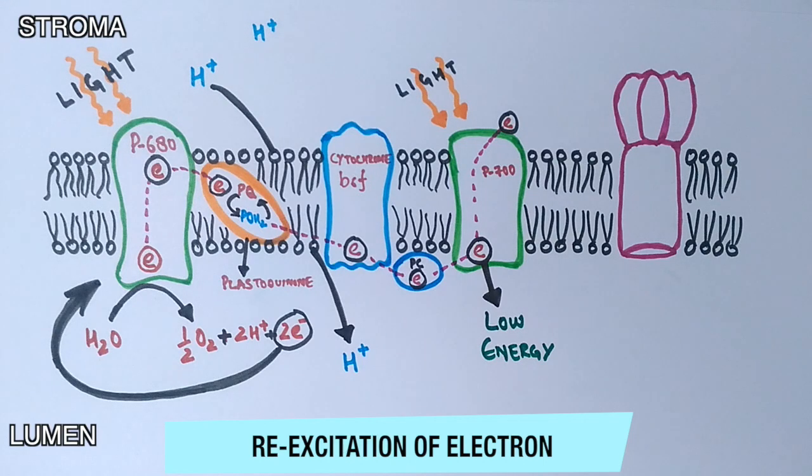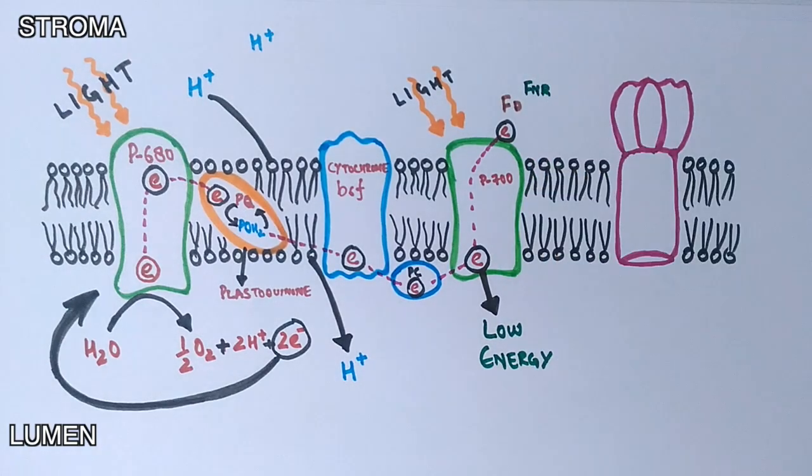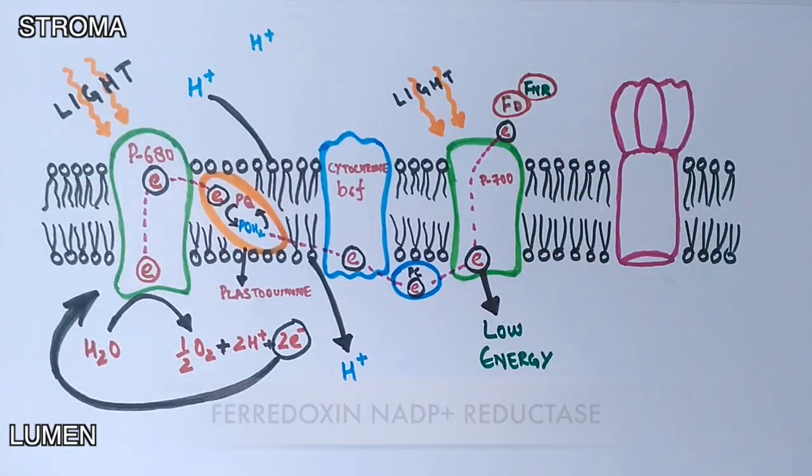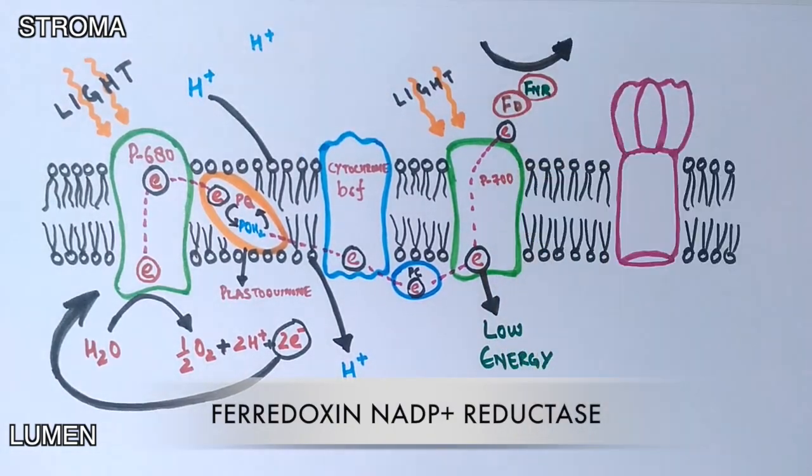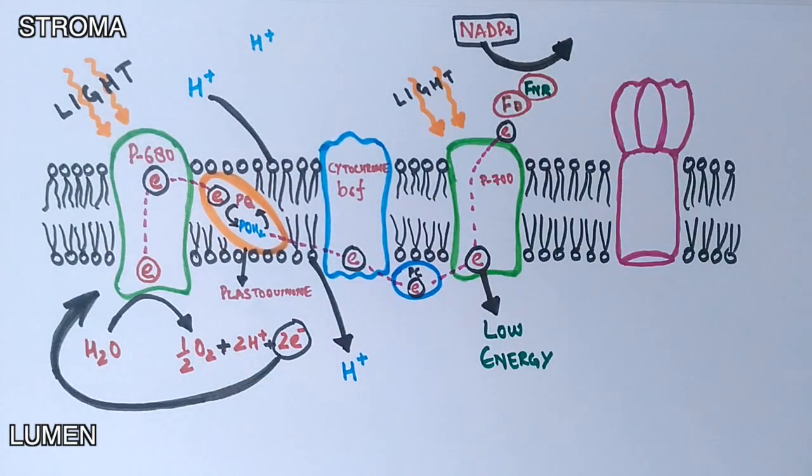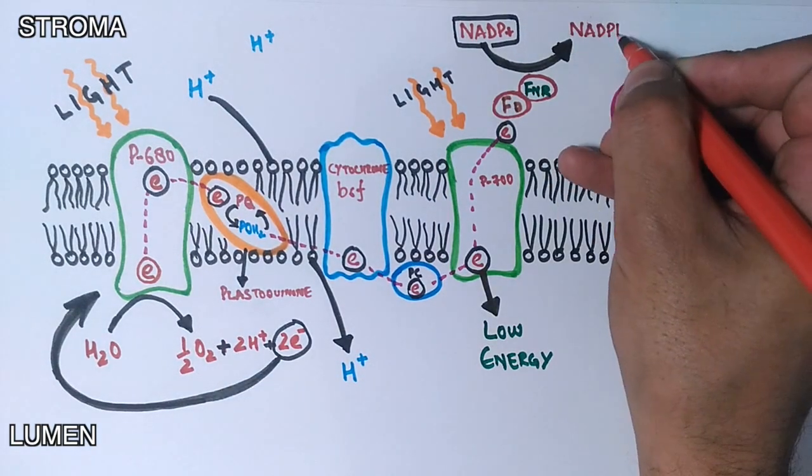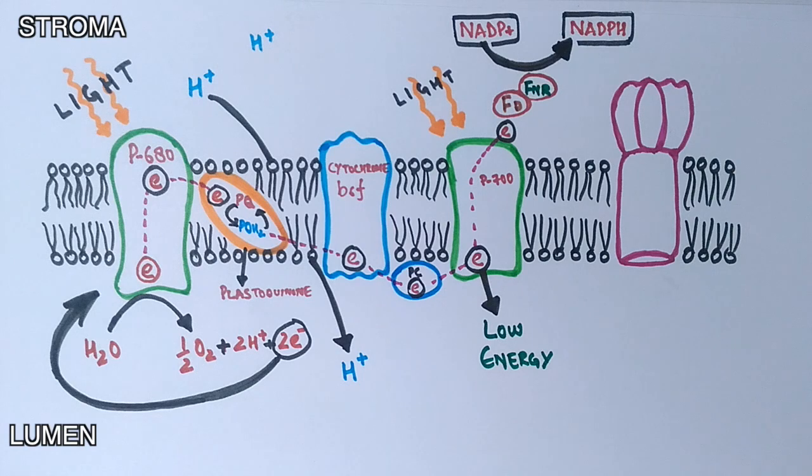Finally, the energized electron is transported to NADP+ by ferredoxin. In the presence of ferredoxin-NADP reductase, the electron is received by NADP+ and gets reduced to NADPH. So we now have NADPH produced from the light-dependent reaction. Now we need another molecule, ATP, for another process of photosynthesis—the Calvin cycle.